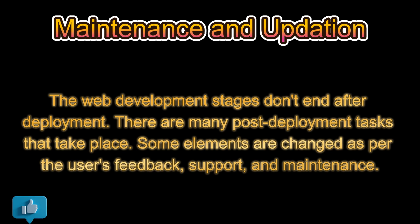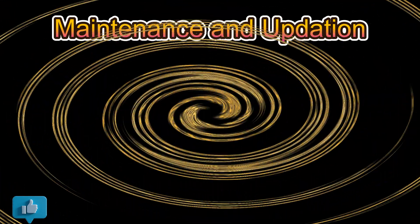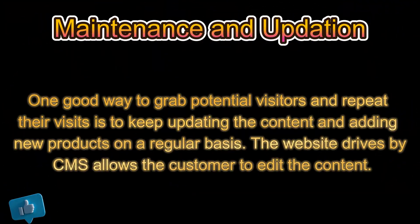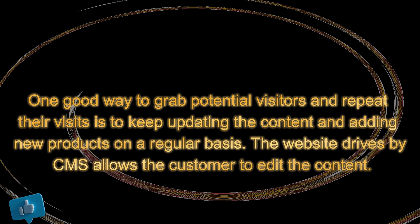Stage seven is maintenance and updation. The web development stages don't end after deployment — there are many post-deployment tasks that take place. Some elements are changed as per user feedback and support requirements. One good way to attract potential visitors and encourage repeat visitors is to keep updating the content and adding new products on a regular basis. A website driven by a CMS allows the customer to edit the content themselves.